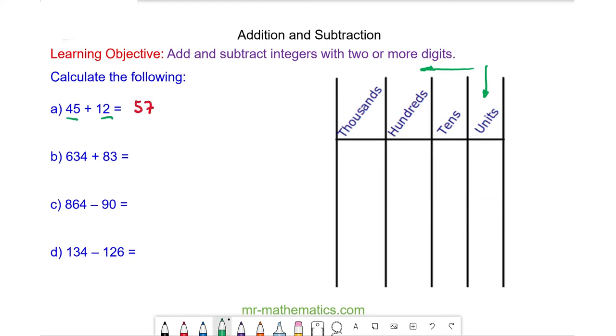For question b, we have 6 hundreds, 3 tens and 4 units add 8 tens and 3 units. So again, we're going to begin in the units. We have 4 add 3, which is 7 units.